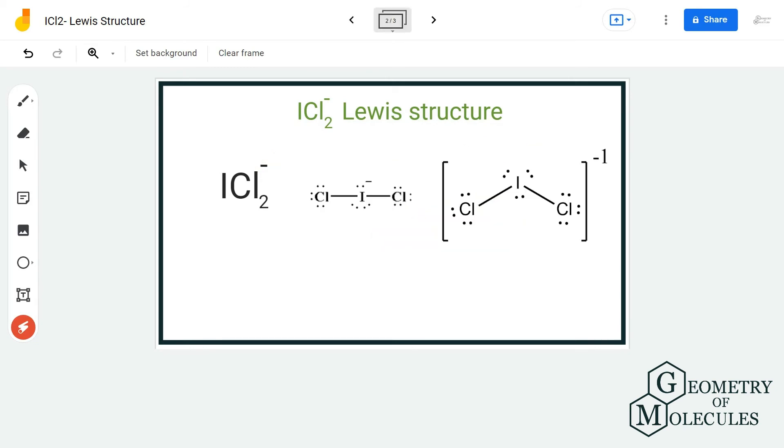All these 6 electrons will be placed on the iodine atom and hence this is the Lewis structure of ICl2-. Here the negative charge is due to the iodine atom. If you calculate the formal charges for this molecule.